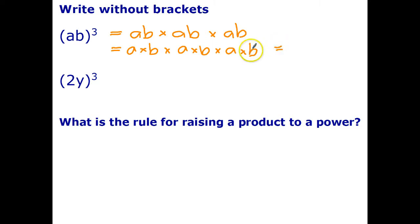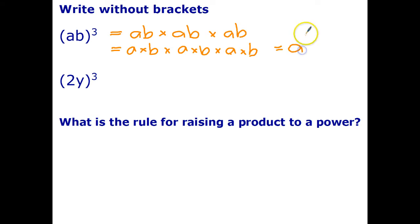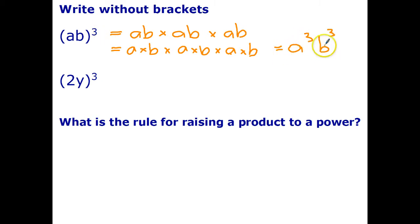And finally, let's simplify this. Because I can multiply factors in any order, a by a by a is a to the power of three, and b by b by b is b to the power of three. So ab all multiplied to the power of three can be written without brackets as a cubed b cubed.